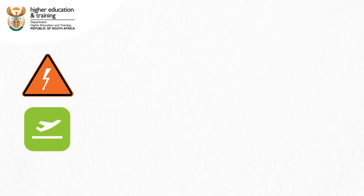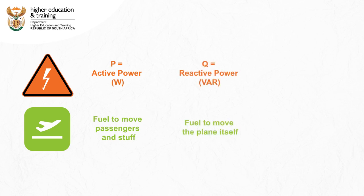We call the energy used to do the useful work in a circuit active power or real power. It is measured in watts and we give it the symbol P for power. We call the energy used to do the necessary but non-useful work, like generating magnetic fields, reactive power.